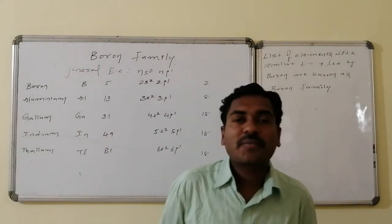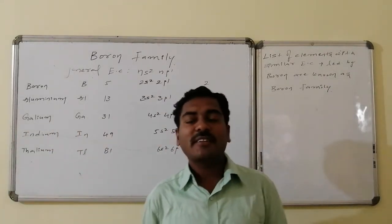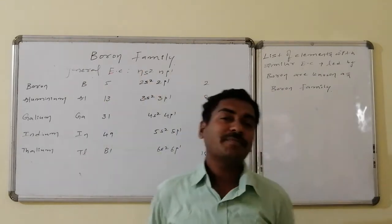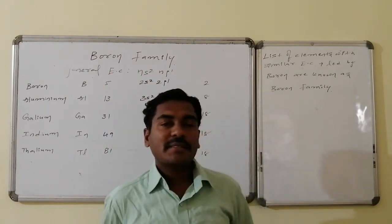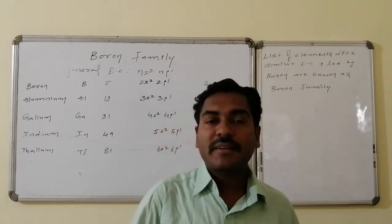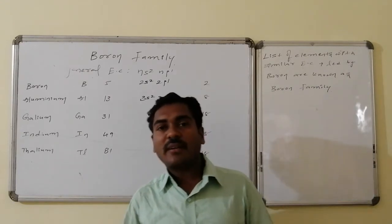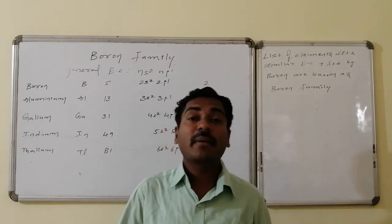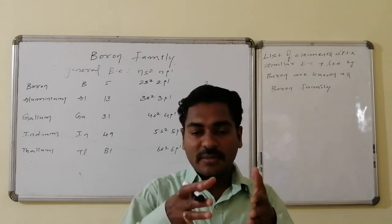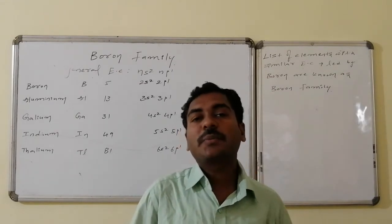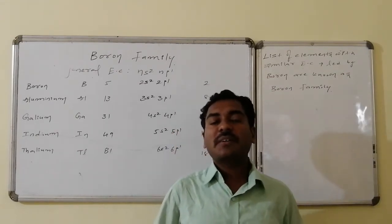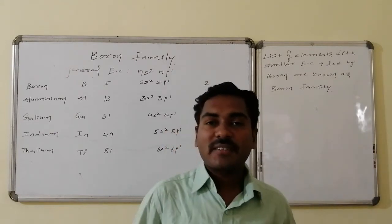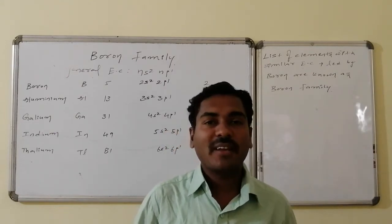Welcome friends. Let us go for a new lesson in inorganic chemistry — that is Boron and Boron family. There are some elements in the periodic table with a similar outermost electronic configuration, and they are led by Boron. Hence that particular group is known as the Boron group, otherwise Boron family, and sometimes we can also call it the Boron and Aluminium family.